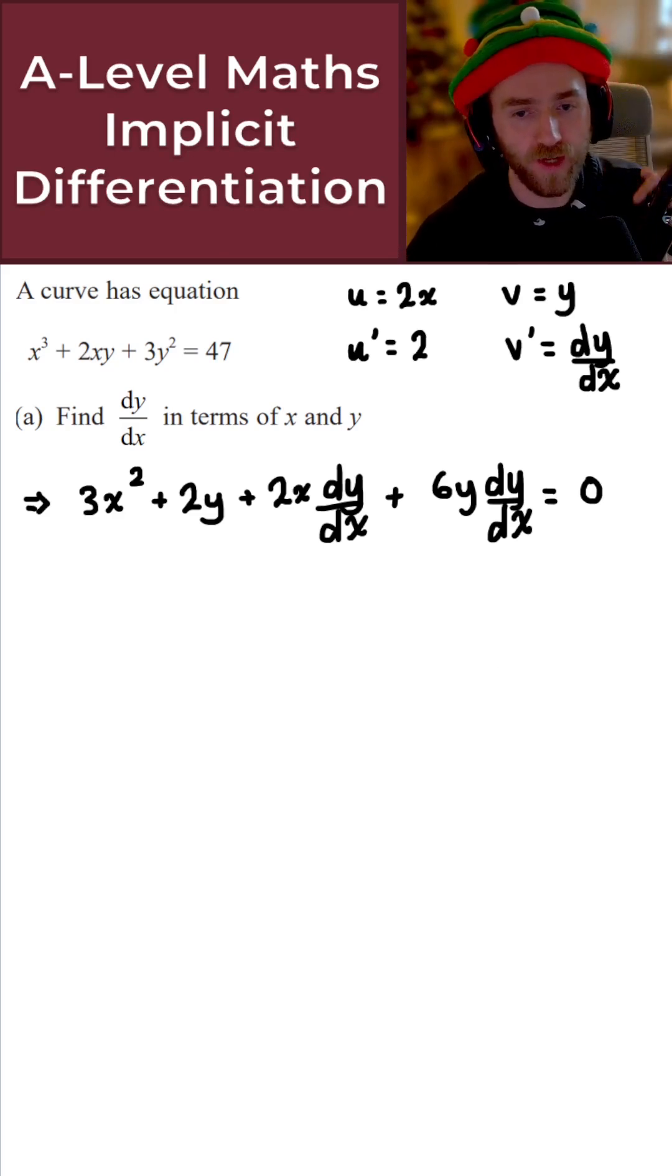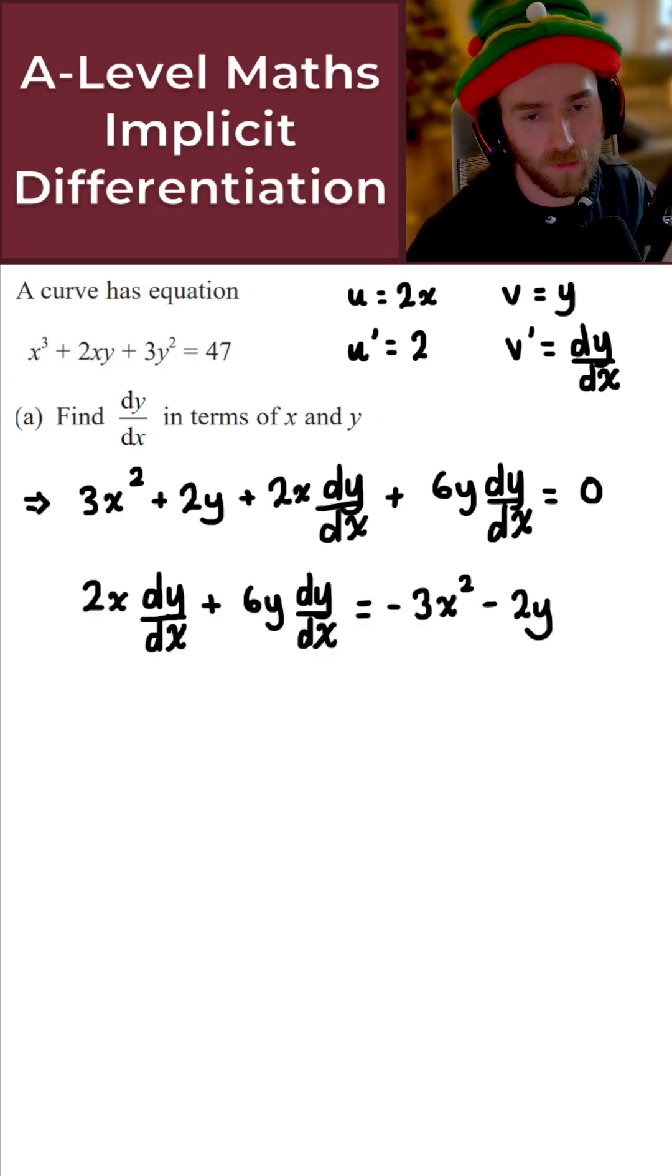What I now want to do is get anything that doesn't involve dy by dx over on the right-hand side. Let's do that underneath, and once we do that, we obtain the following.